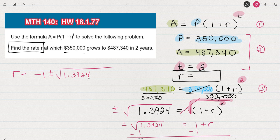And right off the bat, I can see that the interest rate can't possibly be a negative, right? So I know that I can throw out the negative 1 minus that square root and just do negative 1 plus the square root. And when I do the square root of 1.3924, I get this exact answer, 1 and 18 hundredths. So 1.18 minus 1 is equal to 0.18.